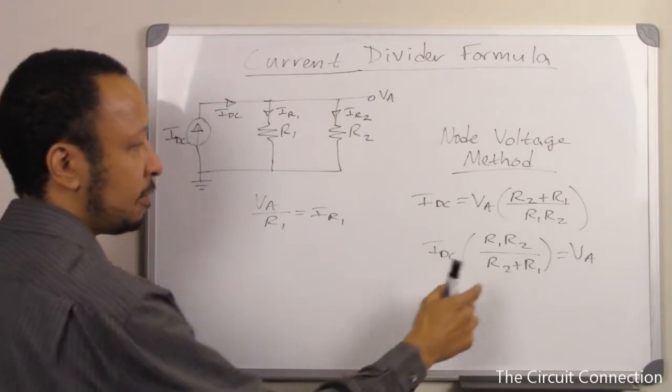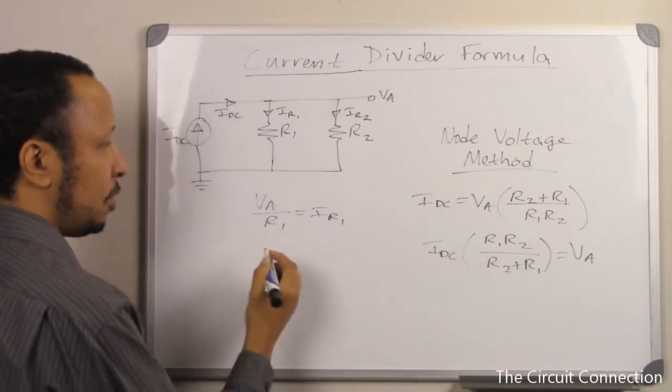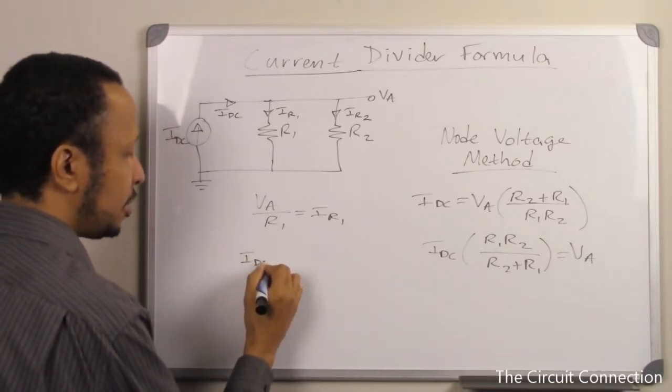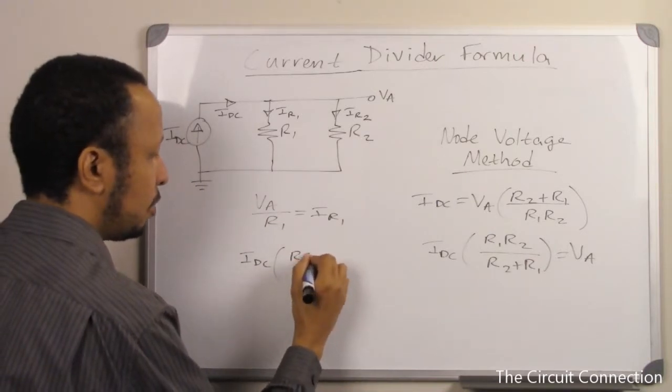Well, what is VA? Now it's in these terms here, the terms that we want to have it in. So, what we'll do is put that expression in there. And so, we have IDC R1 R2 over R2 plus R1.